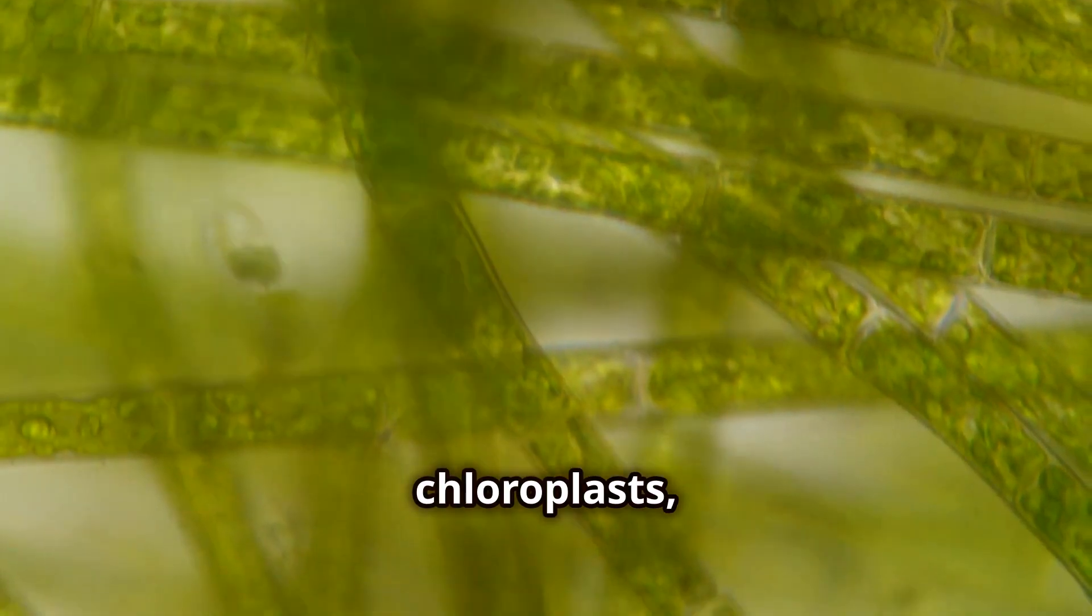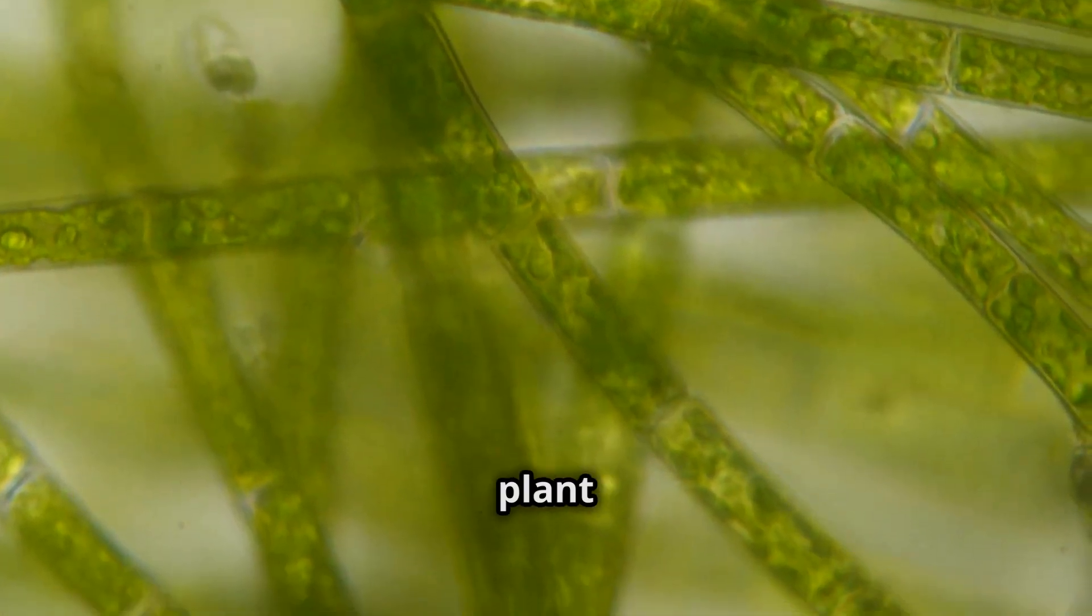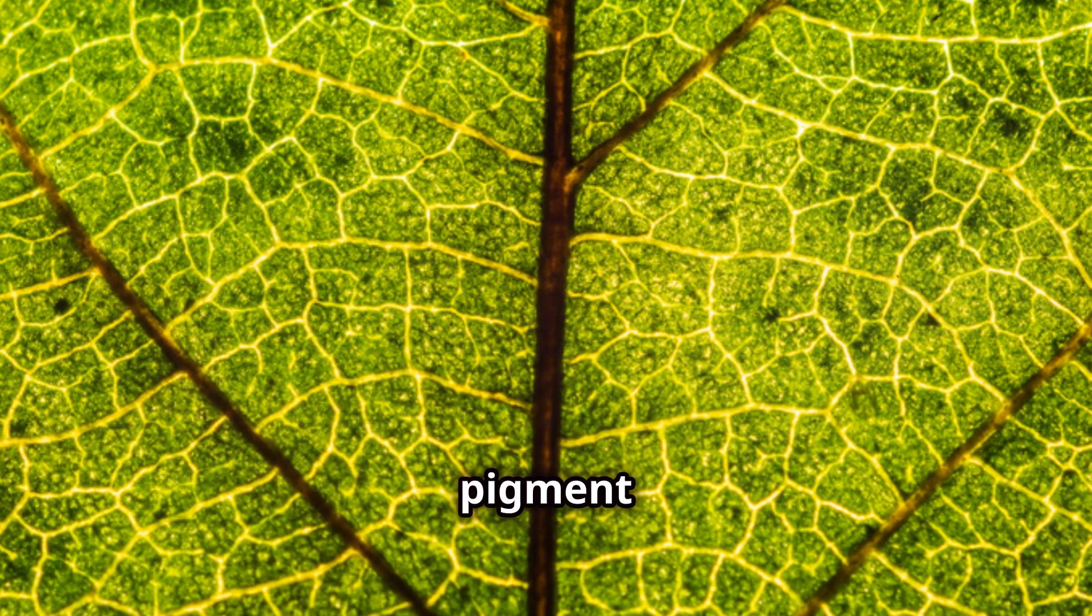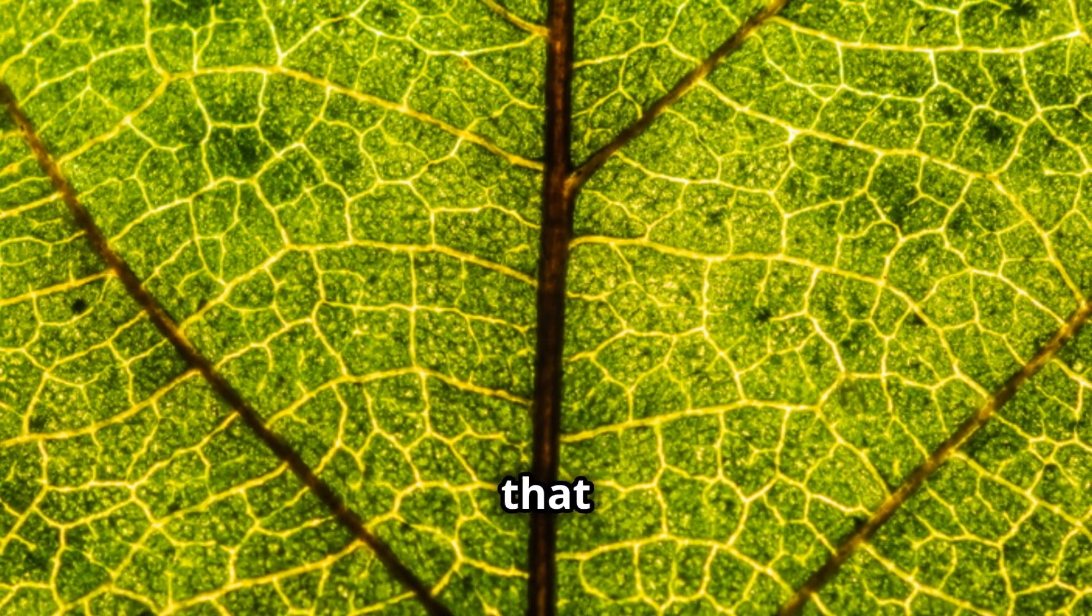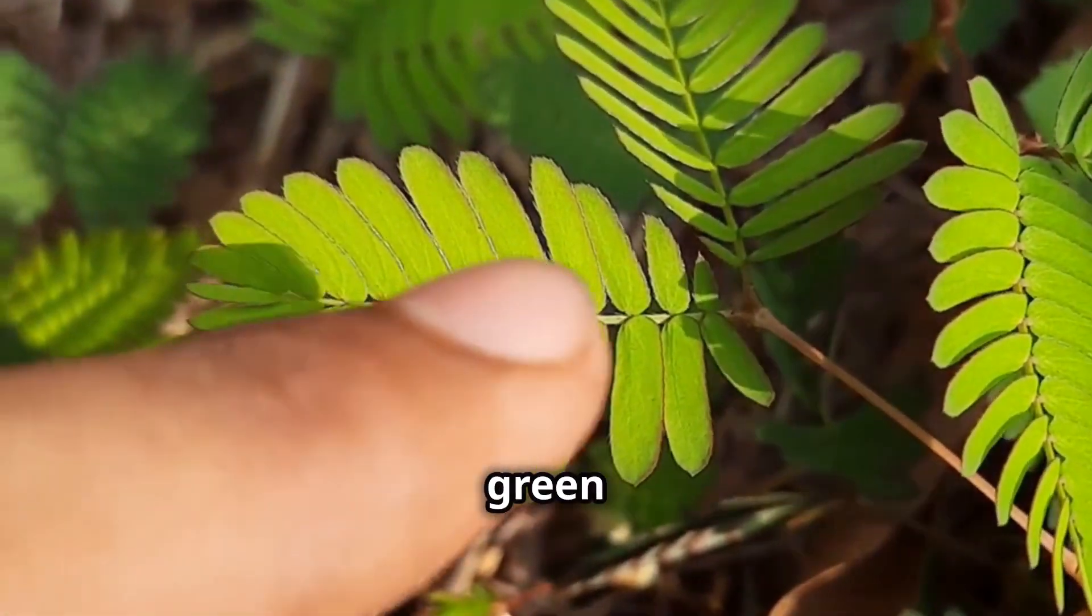It all starts in the chloroplasts, which are specialized structures inside plant cells. Inside the chloroplast, there's a pigment called chlorophyll that absorbs sunlight. This is what gives plants their green color.